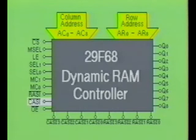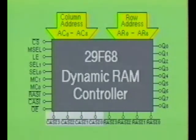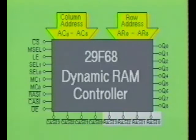NOT CASI is the column address strobe input. PIN NOT OE is the output enable. The pins labeled CAS0 through CAS3 are column address strobe outputs, and the pins labeled RAS0 through RAS3 are row address strobe outputs.